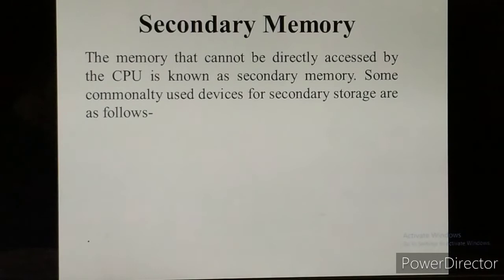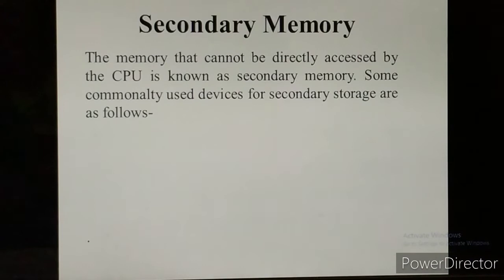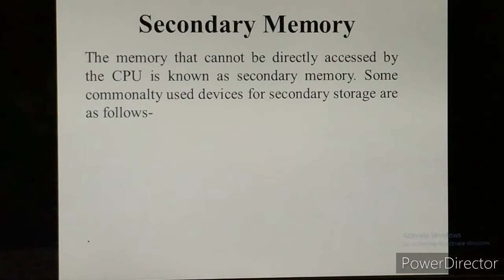Secondary memory stores data permanently. The files and programs required to run the computer are stored in secondary memory. When you are working on any program or file it is stored in primary memory, but when you save the data or program it is stored in secondary memory. The data stored in secondary memory is permanent and you can access it at any time.